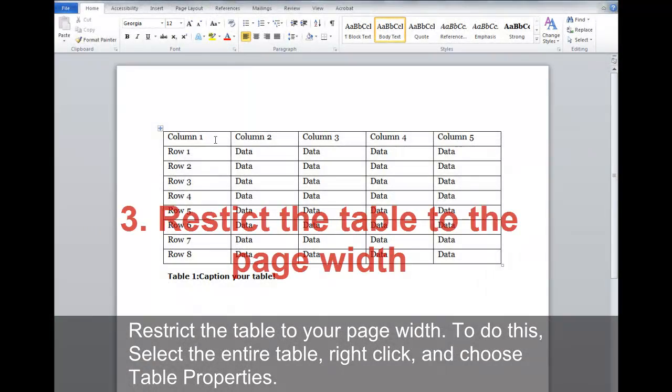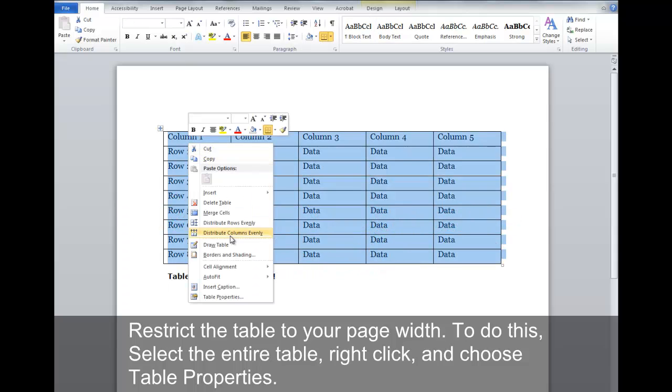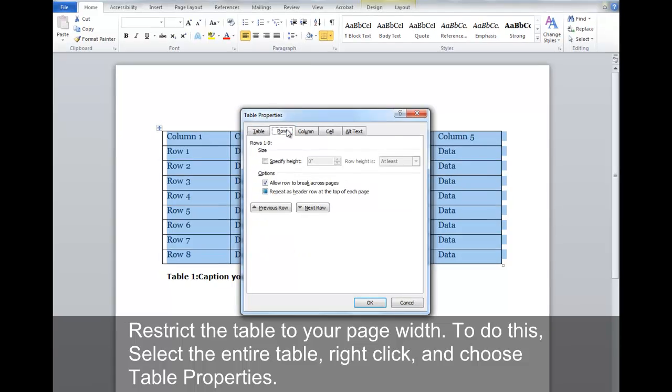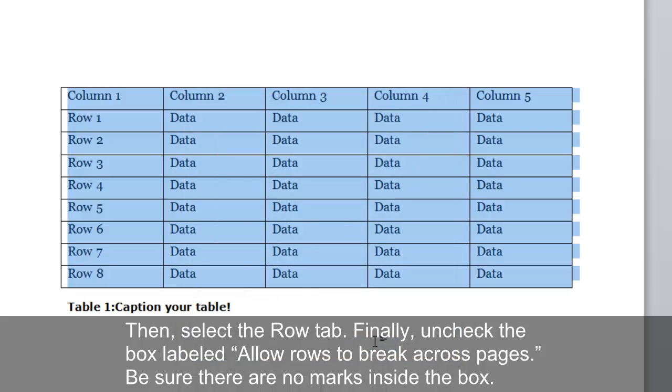Restrict the table to your page width. To do this, select the entire table, right-click, and choose Table Properties. Then select the Row tab. Finally, uncheck the box labeled Allow Rows to Break Across Pages. Be sure there are no marks inside the box.